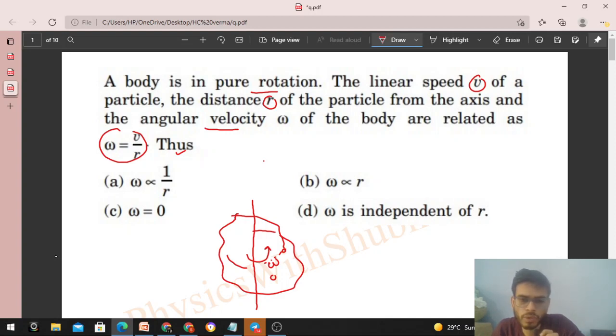Because the time period is the same for all, the time taken for any particle to complete this circle will be the same. So omega will be independent of r and does not depend on r.